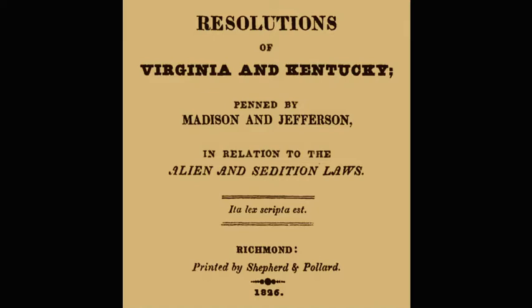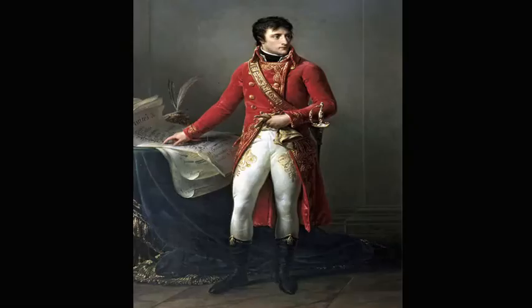As the election of 1800 approached, things did not look good for John Adams' re-election prospects. Still, at the end of 1799, he succeeded where his predecessor Washington had failed: Adams finally secured a formal diplomatic end to the United States' treaty with France. He benefited from timing — in a November 1799 coup, Napoleon Bonaparte seized power, effectively putting an end to the French Revolution. Napoleon desired a stable relationship with the U.S. because he hoped to use the Louisiana Territory as a base from which to supply the French colonies in the Caribbean islands.